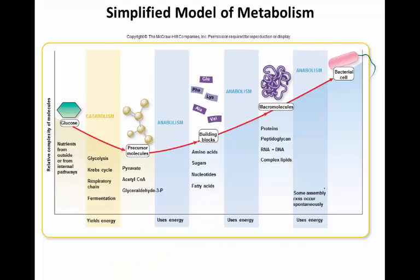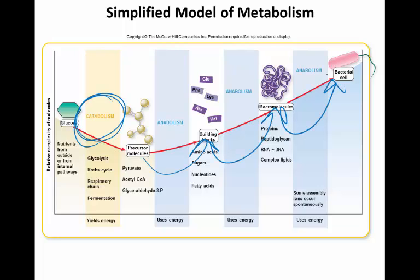Your book refers to this as the simplified model of metabolism. At the base, we see catabolism — we need those smaller molecules and ATP to fuel the larger anabolic processes, where we take small precursor molecules and turn them into monomers or building blocks. Those monomers are then used to make macromolecules, and macromolecules are utilized together to make entire cells or possibly entire organisms.